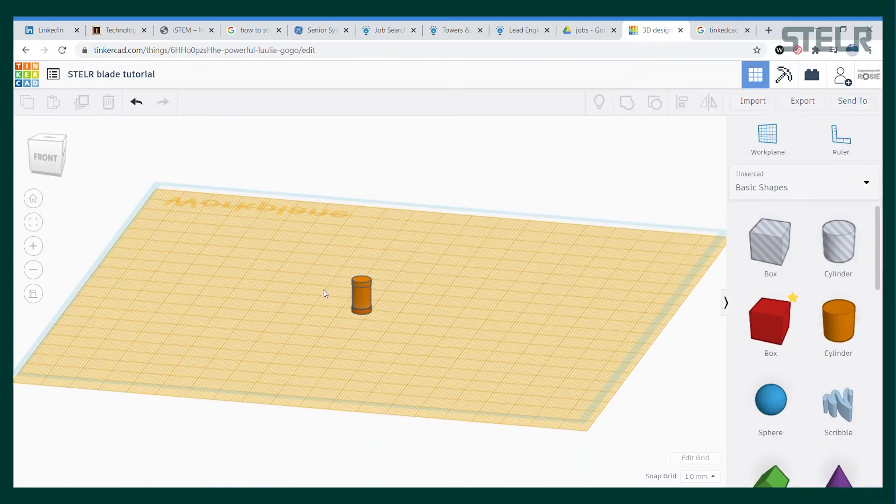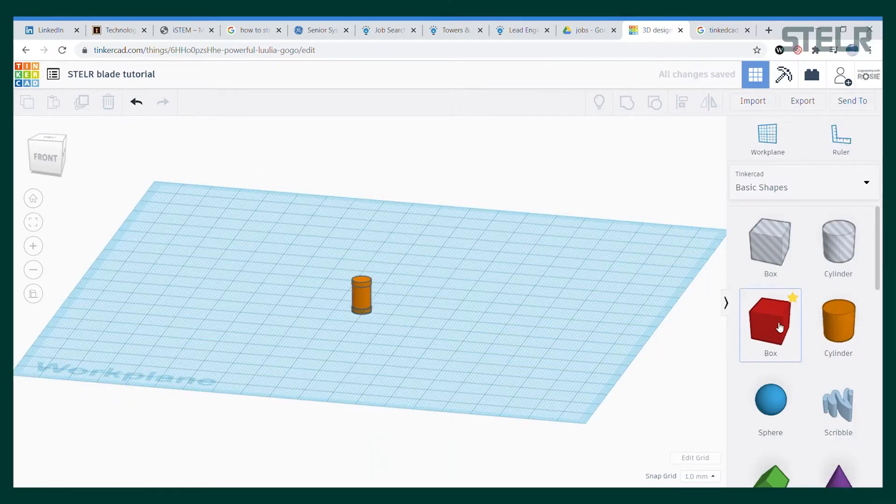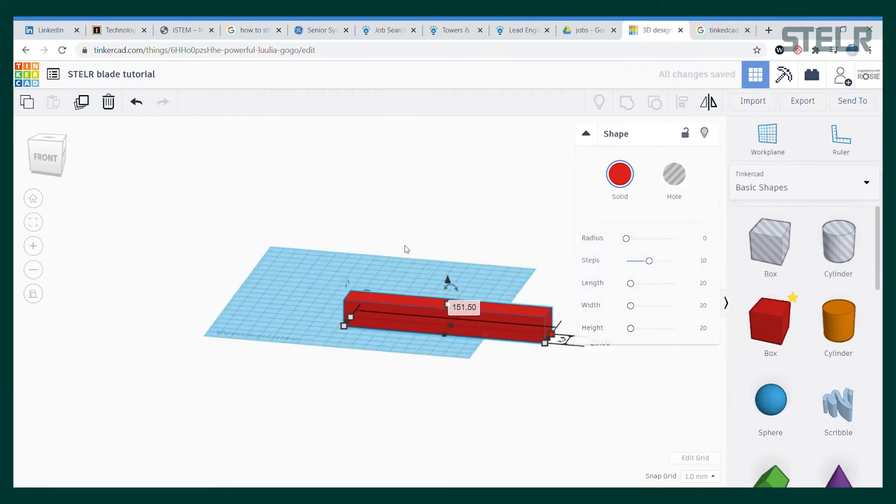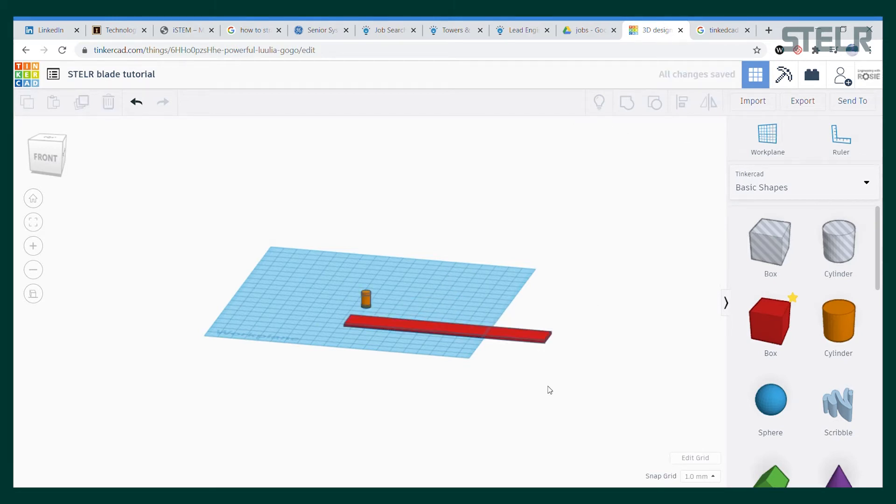Okay, so that is the first part of the blade done. Next we'll make the rectangle that is the main part of the blade. So we drag a block shape onto the work area and change its dimensions to 151 millimeters by 20 millimeters by 1.5 millimeters thick. It doesn't actually matter where you put each dimension as we're going to rotate it into position.